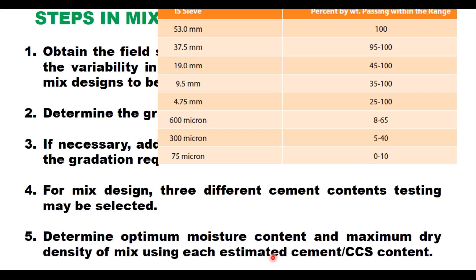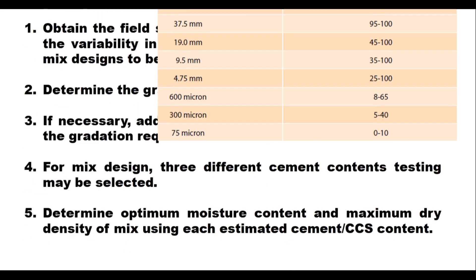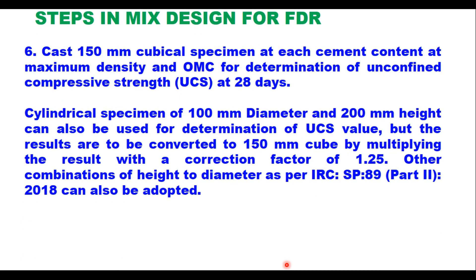Determine the optimum moisture content and maximum dry density of the mix using each cement content. Then cast 150 mm cubical specimens at each cement content at maximum density and OMC for determination of unconfined compressive strength (UCS) at 28 days. Cylindrical specimens of 100 mm diameter and 200 mm height can also be used, but results must be converted to 150 mm cube equivalents by multiplying with correction factor 1.25. Other height-to-diameter combinations may be used as per IRC SP:89-2018 with appropriate correction factors, and the result is expressed as UCS of a cubical specimen.